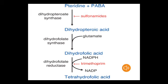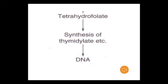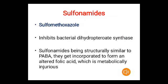Trimethoprim inhibits the third step in this pathway — it inhibits the enzyme dihydrofolate reductase. Sulfamethoxazole inhibits bacterial dihydropteroate synthase and also gets incorporated to form an altered folic acid, which is metabolically injurious.